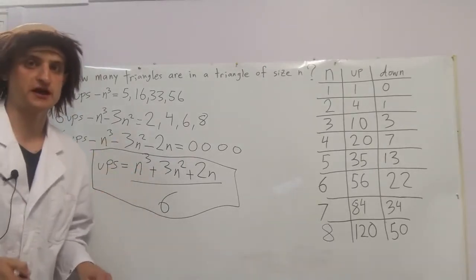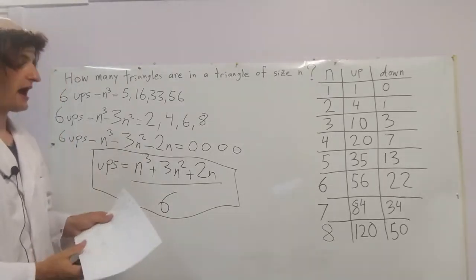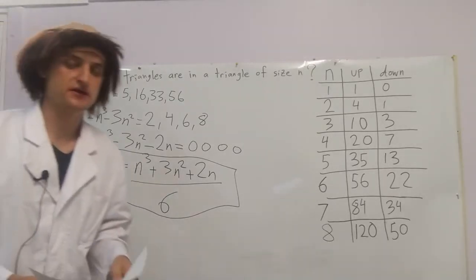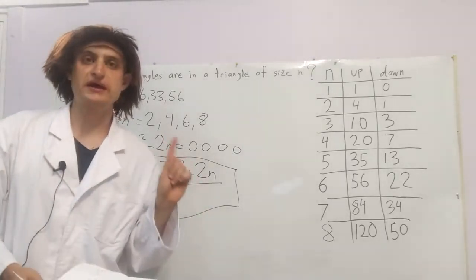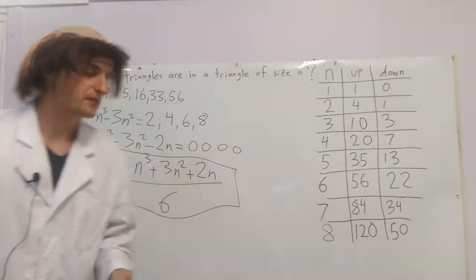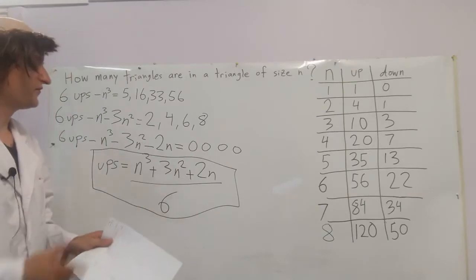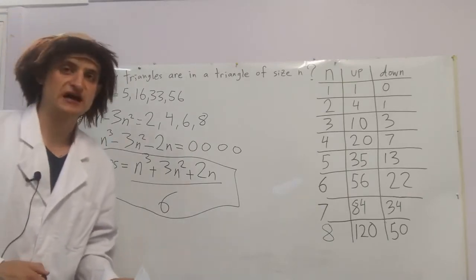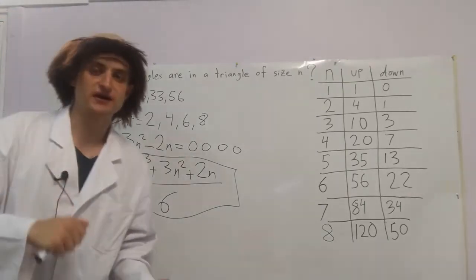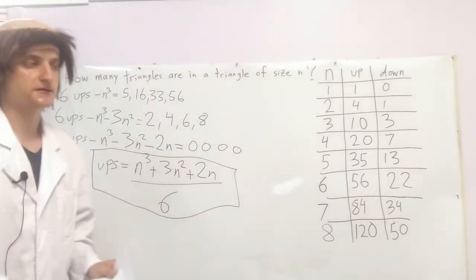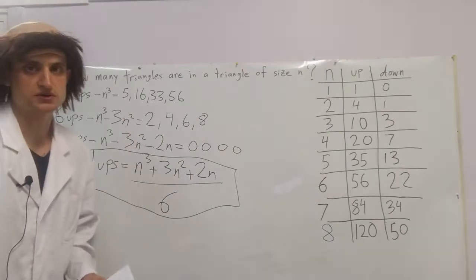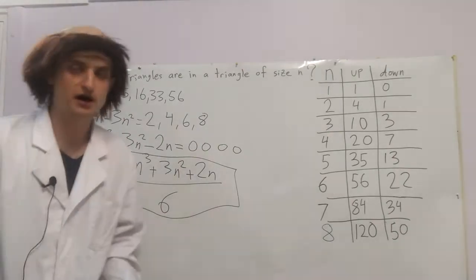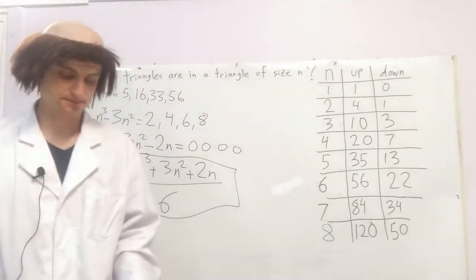Therefore 6·up equals n³ plus 3n² plus 2n, and dividing both sides by 6, our formula for triangles going up is: up = (n³ + 3n² + 2n) / 6. We have now figured out how many triangles there are going upwards. Next we figure out triangles going downwards, which is a bit more complicated.